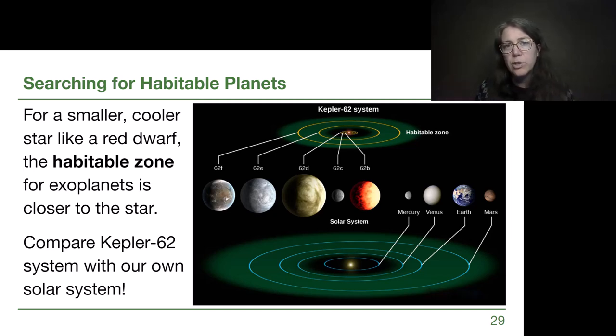Venus, it could be argued, could be in the habitable zone if it had a thinner atmosphere. Mars, it could be argued, could be in the habitable zone if it had a thicker atmosphere. Neither one of those have standing liquid water, so they don't really count for us, but they could in slightly different circumstances.